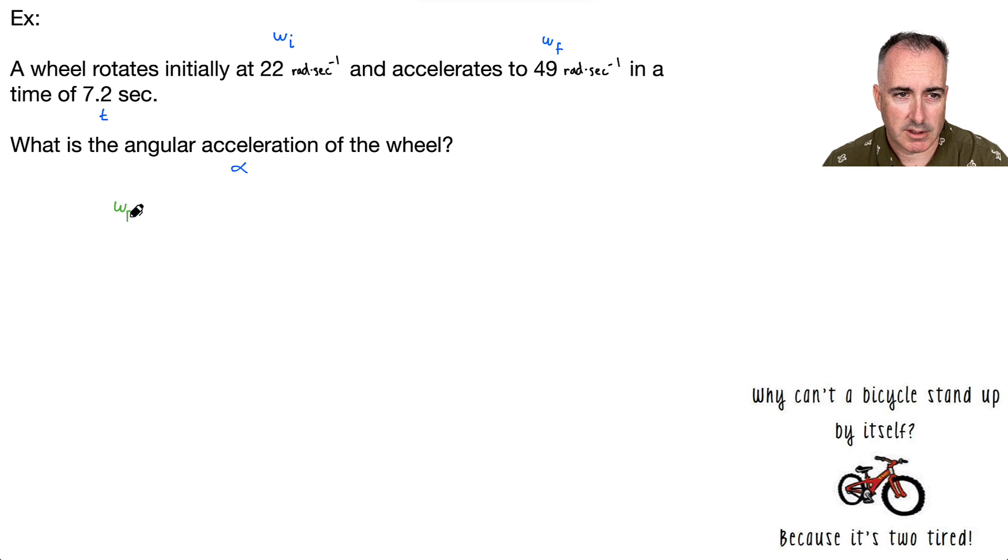But in this case, it goes, instead of v, it's omega f. This is omega i plus alpha times time. This, I think, is a good equation because it has exactly what I need. I can do it in one step.